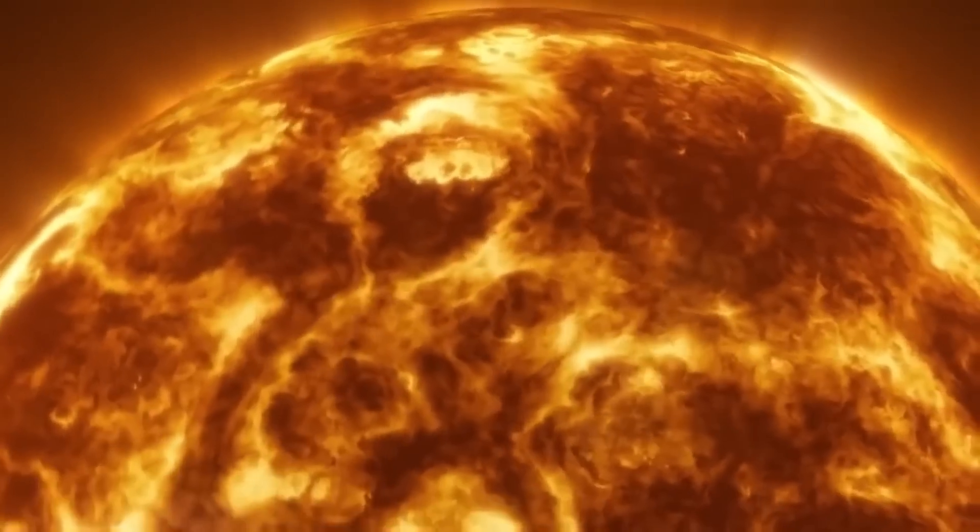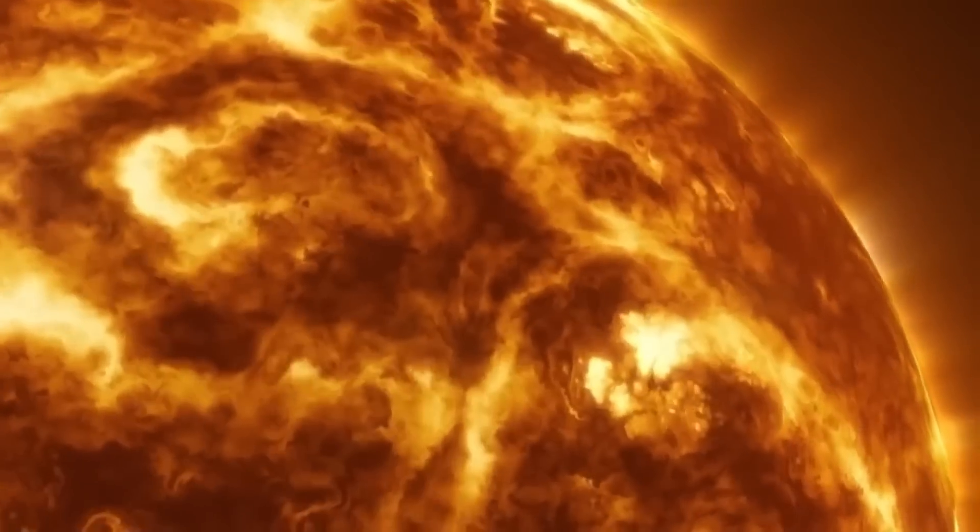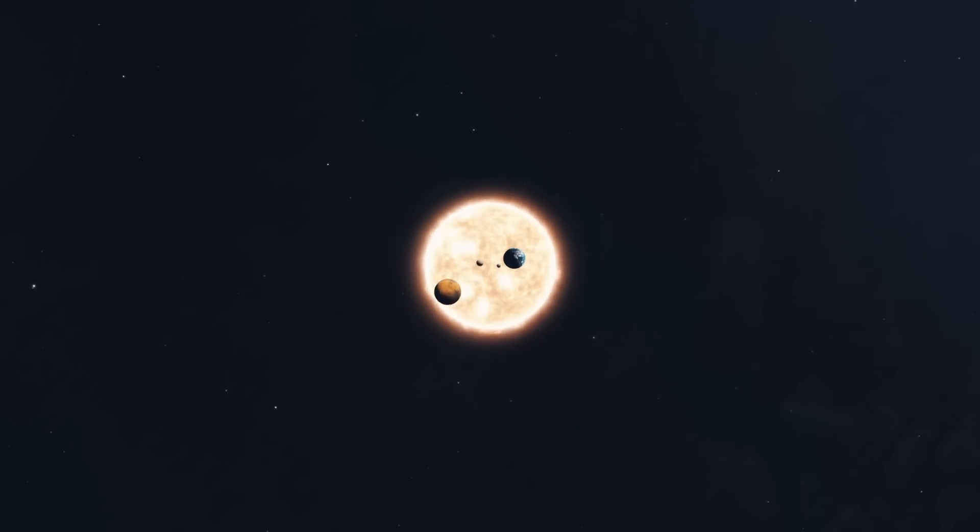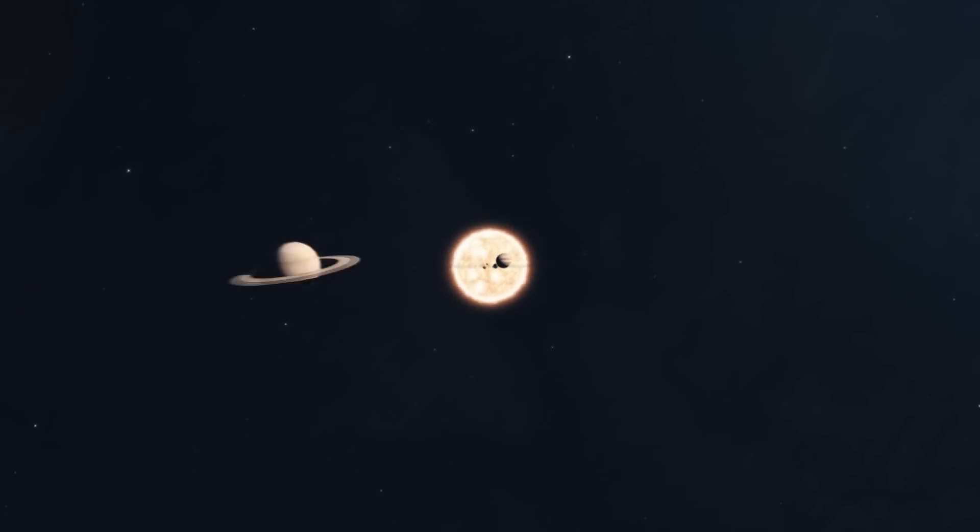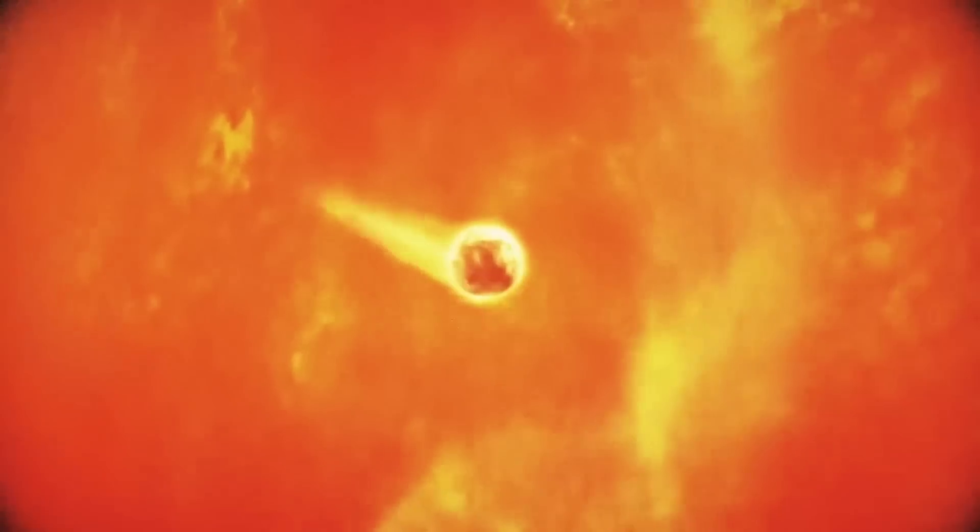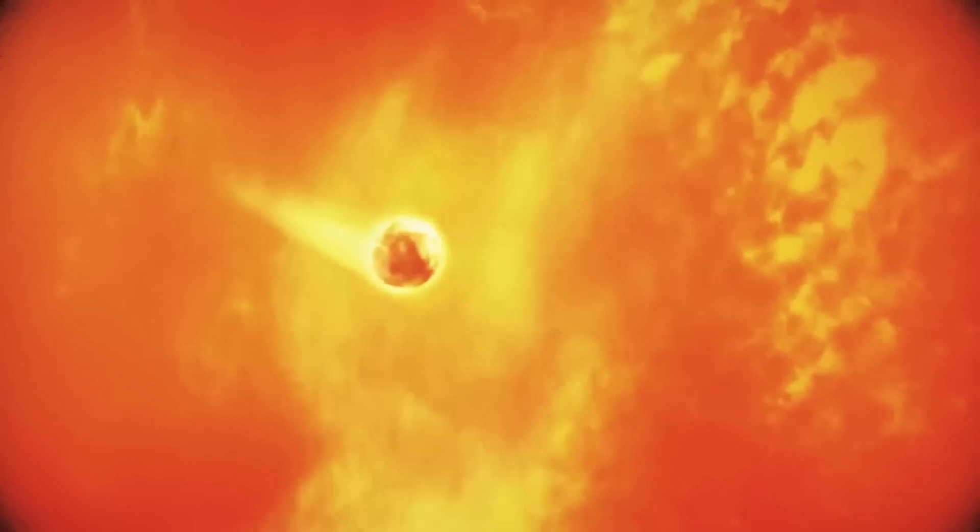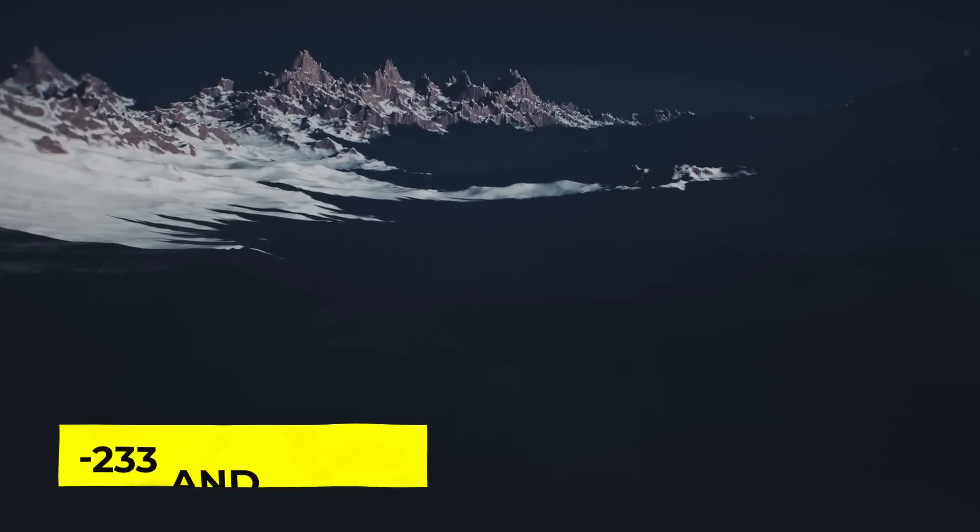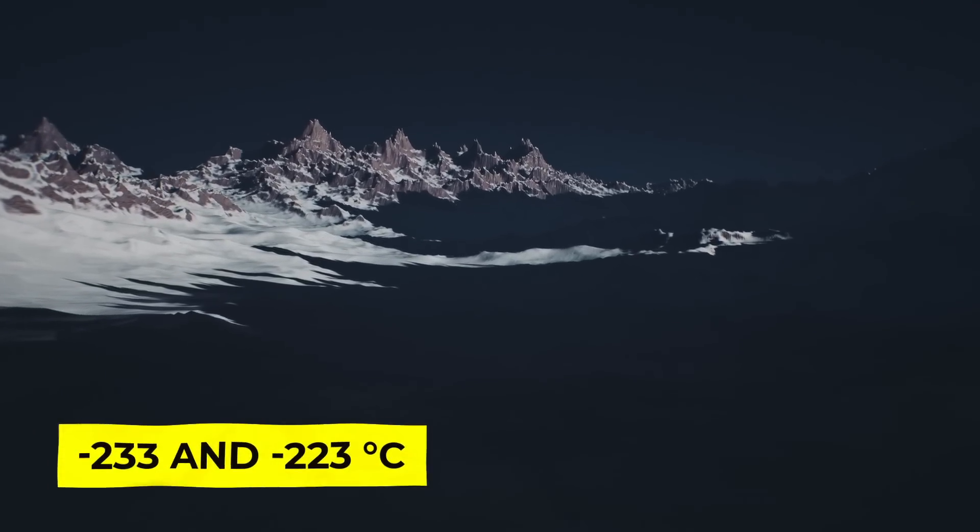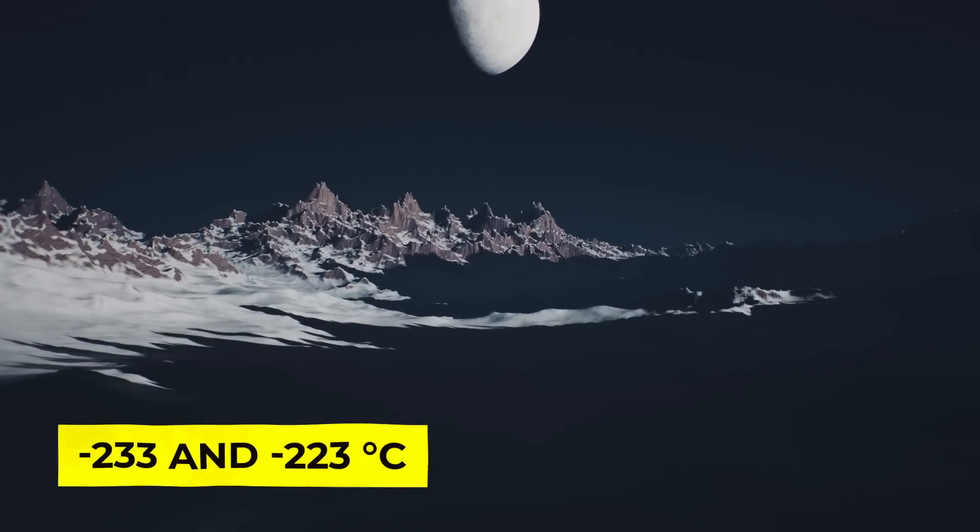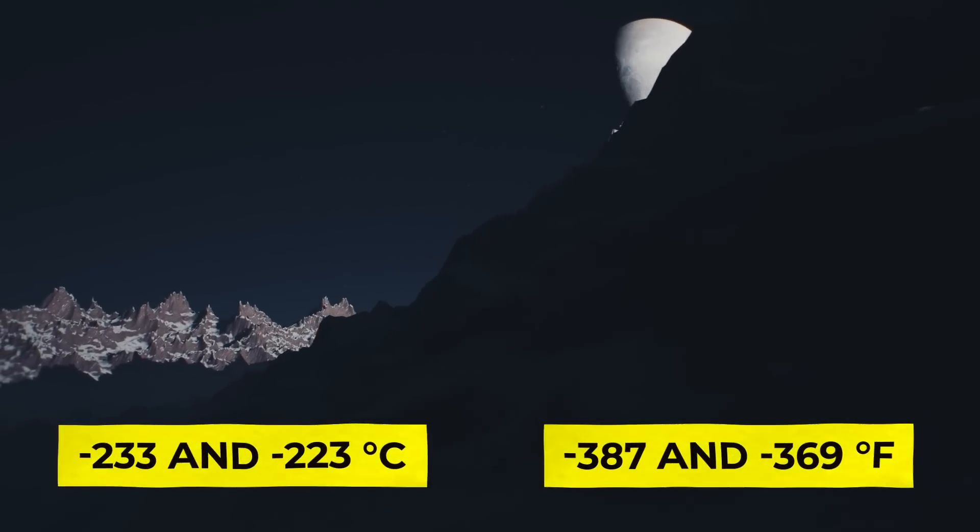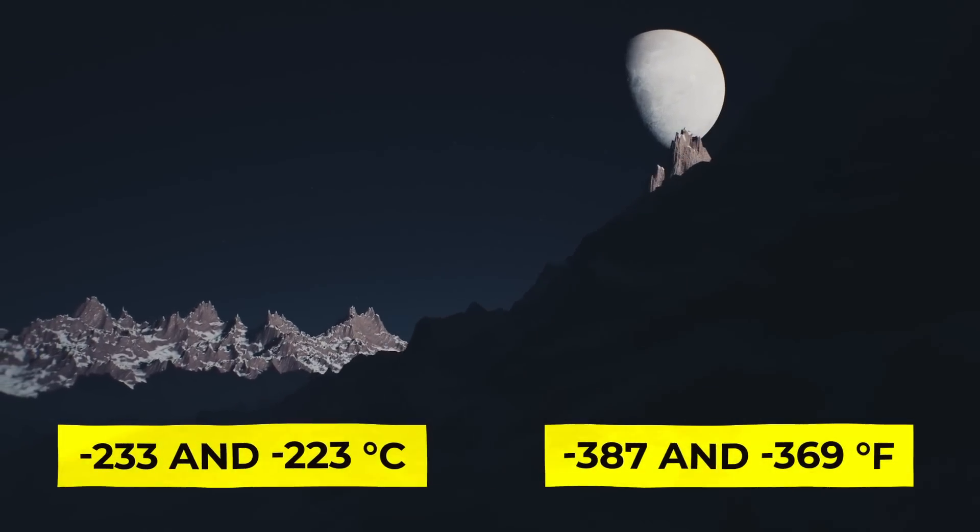The Sun will grow significantly bigger and brighter once it begins to die, as was already mentioned. What about planets and dwarf planets that are freezing far away? This will turn nearby planets into fiery wastelands. Pluto is a prime example. Pluto's current temperature ranges between minus 233 and minus 223 degrees Celsius. That's minus 387 and minus 369 degrees Fahrenheit.